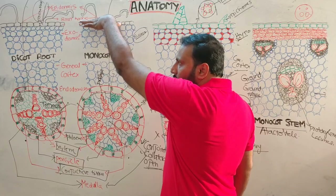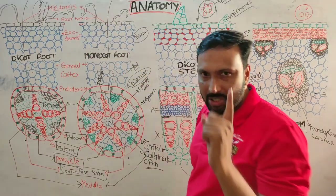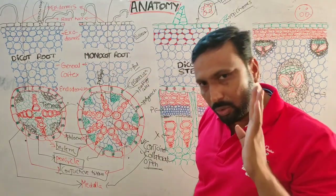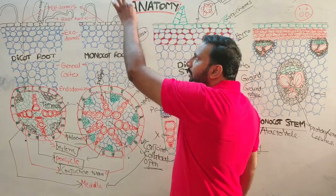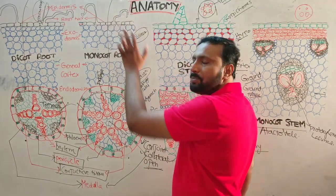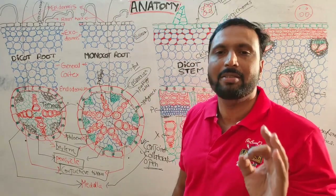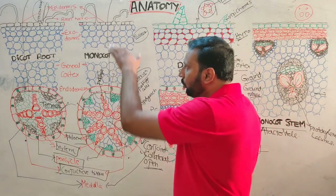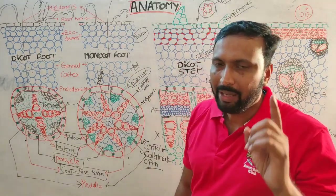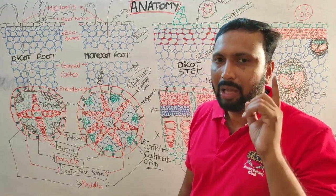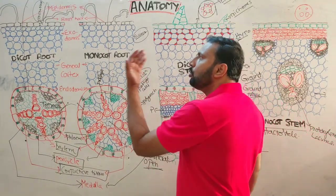Due to the presence of root hair, the epidermis is also called the piliperous layer, rhizodermal layer, or epiblema. The epidermis protects inner tissues. Root hairs absorb water and mineral salts into the roots — that is the main function of the epidermis.